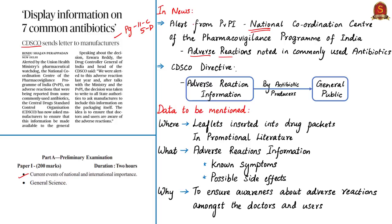This directive is based on the alert given by the National Coordination Centre of the Pharmacovigilance Programme of India (PVPI), which has noted adverse reactions on commonly used antibiotics. Drug manufacturers must mention the adverse reaction information in the leaflets inserted into drug packets or in promotional literature. The details should include known symptoms on consumption of the particular antibiotic, and also the possible side effects. Declaring this adverse reaction information would ensure awareness amongst doctors and users of the possible adverse reactions.